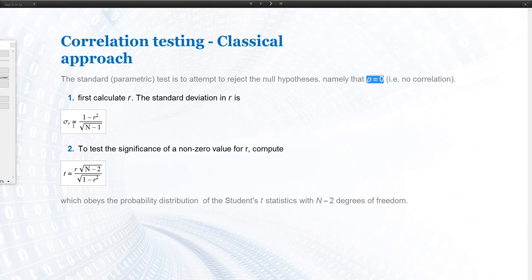Then we can compute the standard deviation for our measured correlation coefficient of the sample that's computed like this. And with the standard deviation and the r, we can compute the t-score, for example, that obeys the student's t-statistics and the degree of freedom is n minus 2.